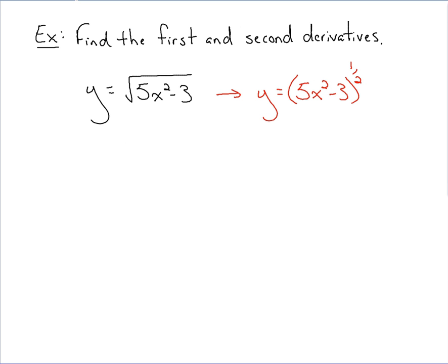Now, if we find y prime, using the chain rule, bring the one half down. We keep our quantity the same, 5x squared minus 3. We adjust for our new power. Subtract one away from one half, get negative one half. And then we complete our chain here by tacking on the derivative of that quantity of 5x squared minus 3. So that derivative would be just 10x, right?